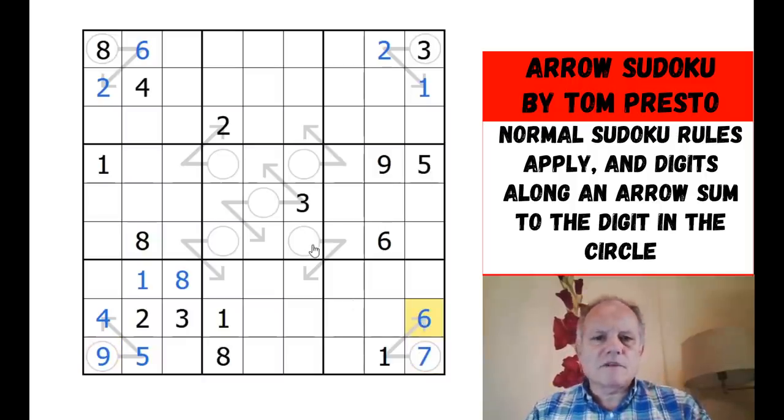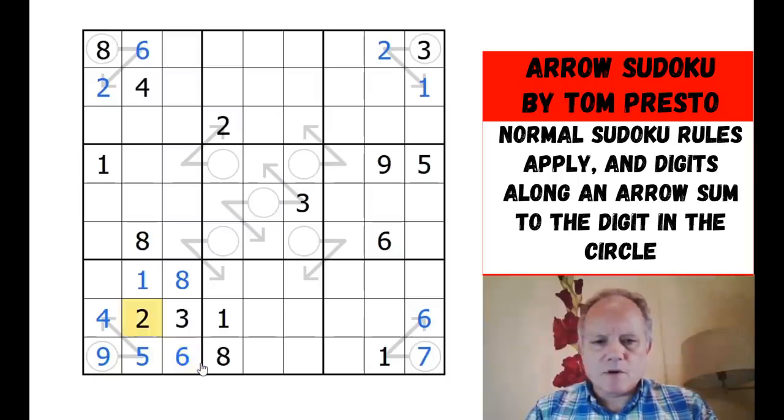Let's do some regular Sudoku now. I can finish off this box thanks to the seven in this corner. That sorted out the six, seven, five, three. Six in column one has to be there. Three and five for the other two cells.